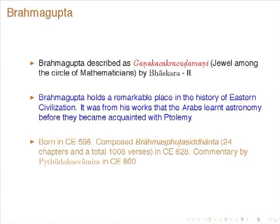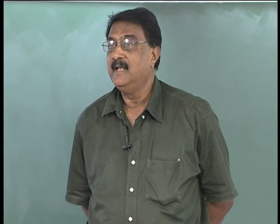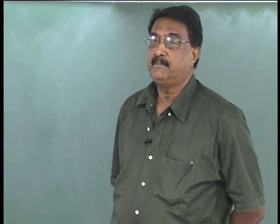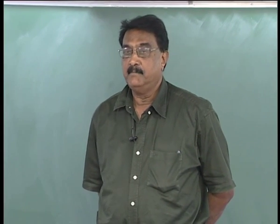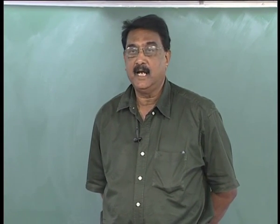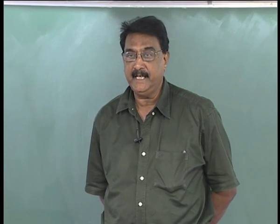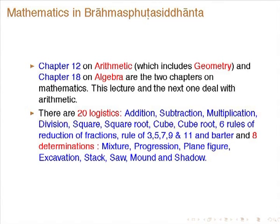You can see that Aryabhatiya has only 121 verses and is a much more elaborate work. As you would have seen from Aryabhatiya, mathematics is also part of the astronomy text; Brahmagupta follows the same pattern. The two chapters are essentially on mathematics — one on arithmetic which includes geometry, and another on algebra. As Professor M.D. Srinivas pointed out, it also has a chapter on Chandas.